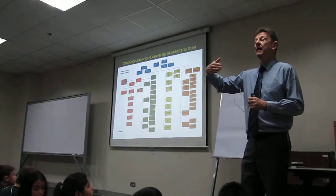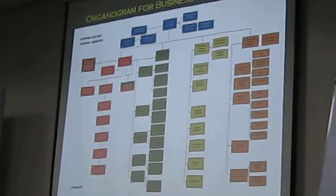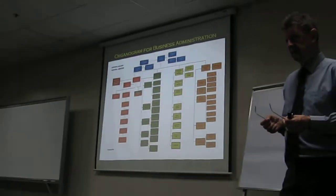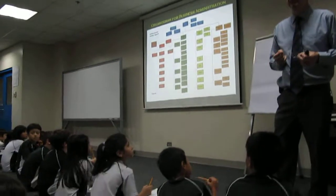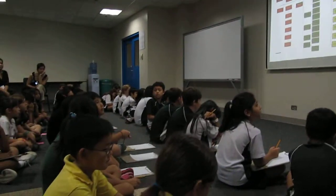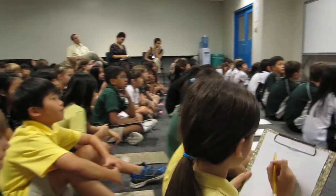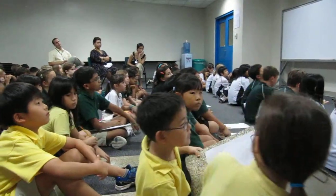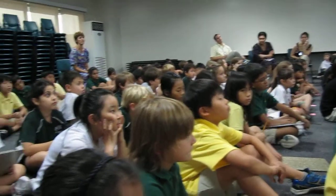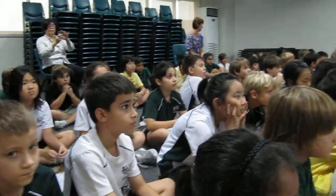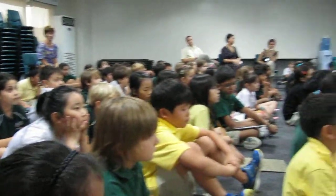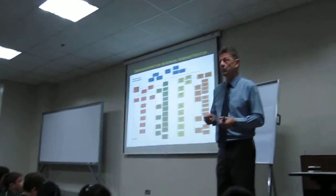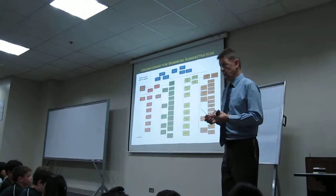The way that the business side of the school works is really complicated, and there are huge numbers of people involved. There are more people who work on this side of the school than who work in the actual teaching side. So we have 200 teachers, but we have 300 other people working in the school. That's an awful lot.